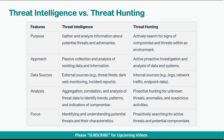Threat intelligence helps with aggregation, correlation, and analysis of threat data to identify trends, patterns, and indicators of compromise. On the other end, threat hunting is proactive hunting for unknown threats, anomalies, and suspicious activities.